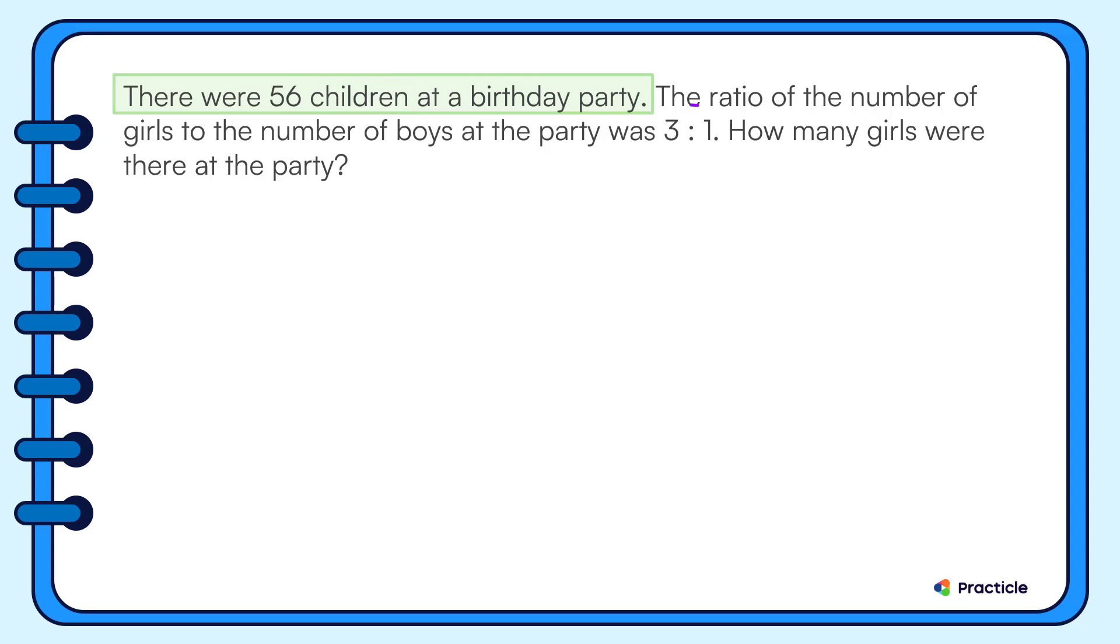Then, we are given a ratio. We know that the ratio of the number of girls to the number of boys at the party was 3 to 1.